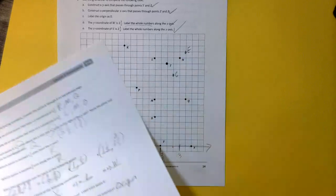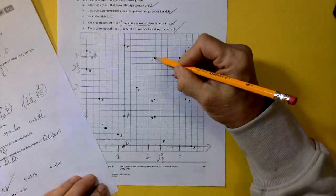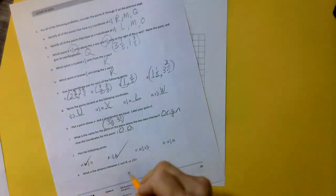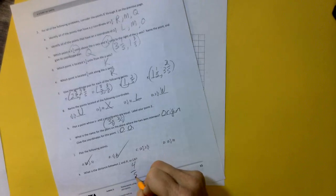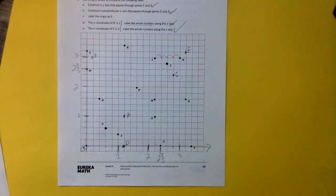All right. What is the distance between L and N? Well, we can count. 1, 2, 3, 4 fifths. All right. And the last two questions.